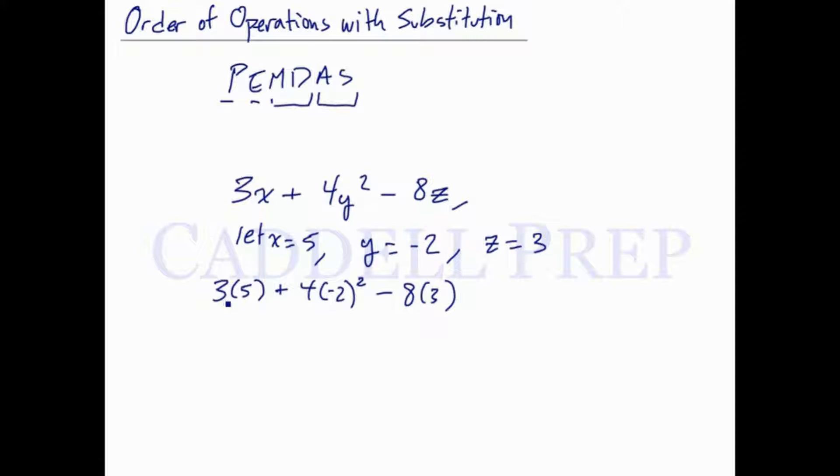Now we can evaluate this doing parentheses first. There's nothing to do inside the parentheses - they're just single values. We can move on to exponents. We have negative 2 squared, so we should do this first. Negative 2 squared is negative 2 times negative 2, which comes out to positive 4.